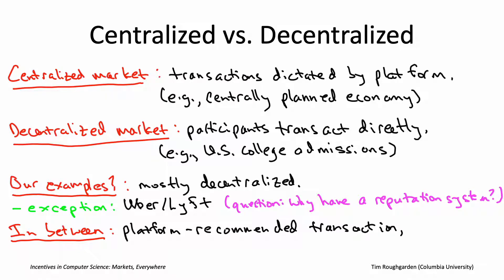Uber and Lyft would be the extreme case where exactly one transaction is recommended, and moreover you're not allowed to engage in any other transaction. So recommendations are one way to take what's really a decentralized system and add some centralized interventions and recommendations for possible transactions. I want to talk about a second way you can interpolate between the extremes of decentralization and centralization, which is to batch subsets of transactions for centralized processing.